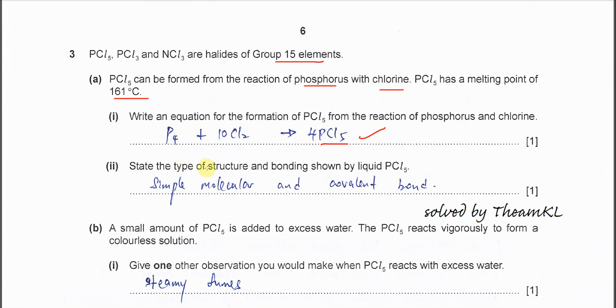Part 2: State the type of structure and bonding shown in liquid PCl5. For this one, you need to look at the melting point. The melting point is 161, which is quite low. So it's telling us it's going to be a simple structure. It must be a simple molecule. And the bonding must be covalent bonding because they are both non-metals. The difference of electronegativity won't be so great.